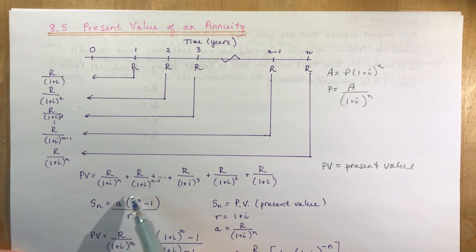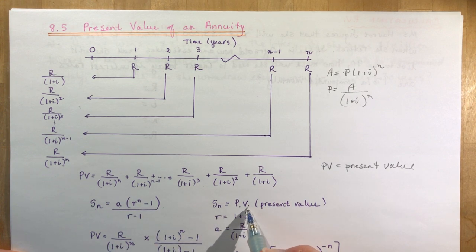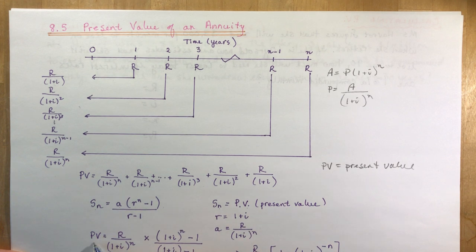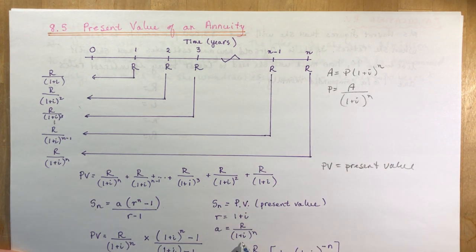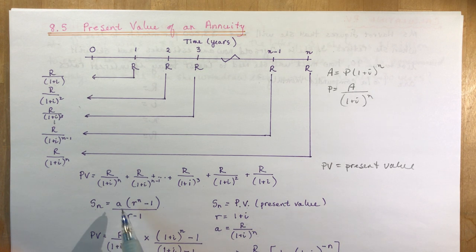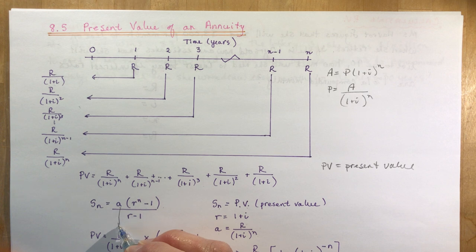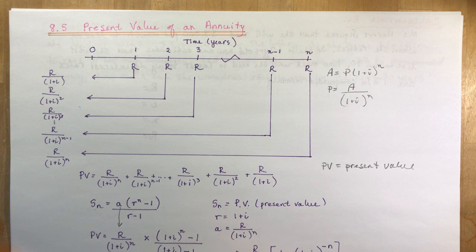Now we're going to use the sum of a geometric sequence here, a geometric series where we have a as our first term. In this case we're going to use a as the last number times r^(n-1)/(r-1). So here we have Sn replaced with present value. My rate is going to be 1 plus i, and the a is going to be R/(1+i)^n.